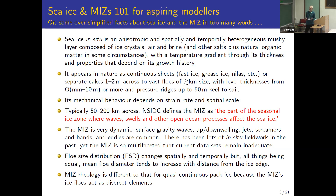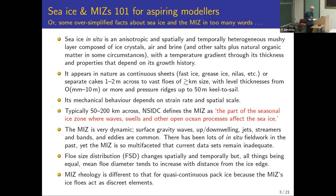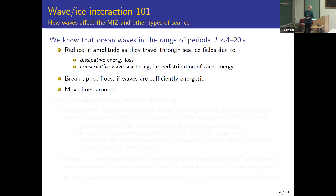The floe size distribution is an open question. If you discount currents and winds, it tends to increase in mean floe size as you move further in. On rheology — the continuous rheologies used in the big models need revision. We need to look at the marginal ice zone as being composed of discrete elements.